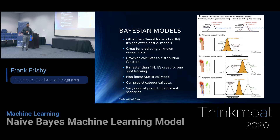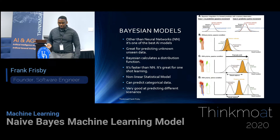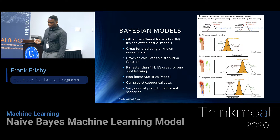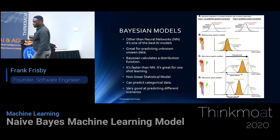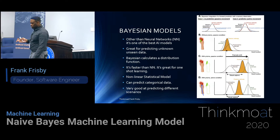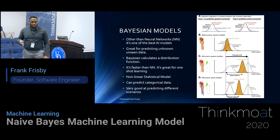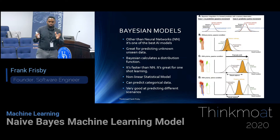Now Bayesian models — this is getting into a little more high-level mathematics and statistics, and this gets into a distribution.